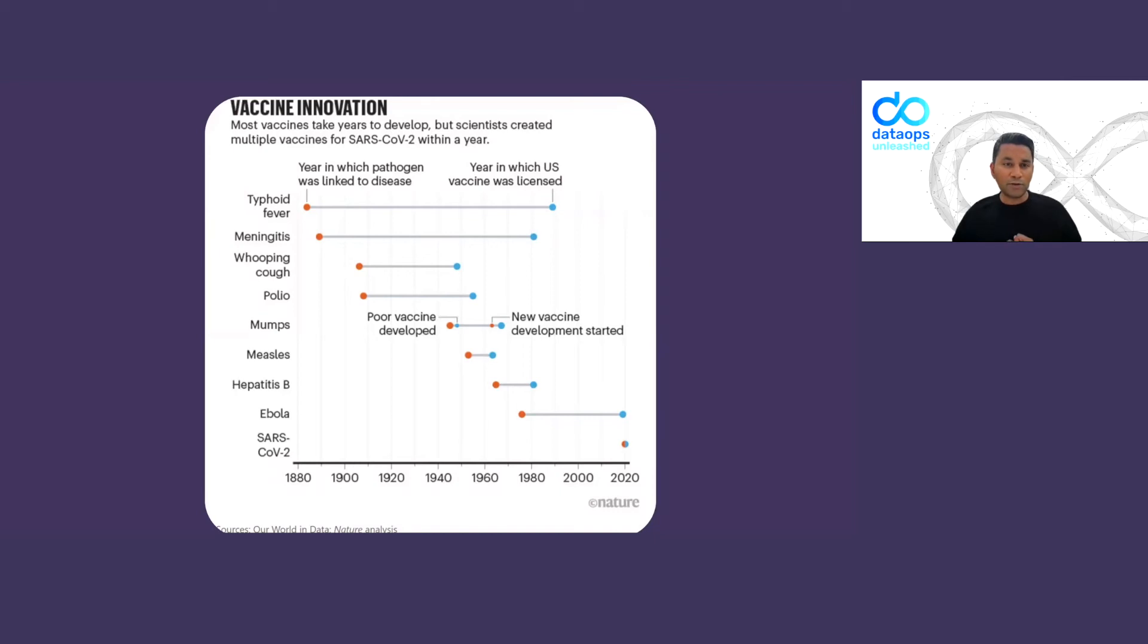One of these dots shows you the year in which the pathogen was linked to a disease, and then the blue dot is showing you when the vaccines are actually licensed and available. The best we've ever done was to release the mumps vaccine in a mere four years.